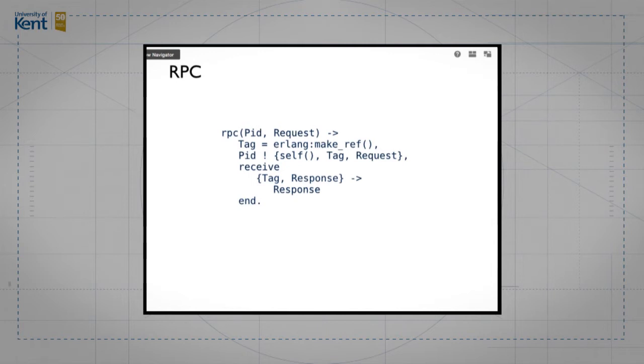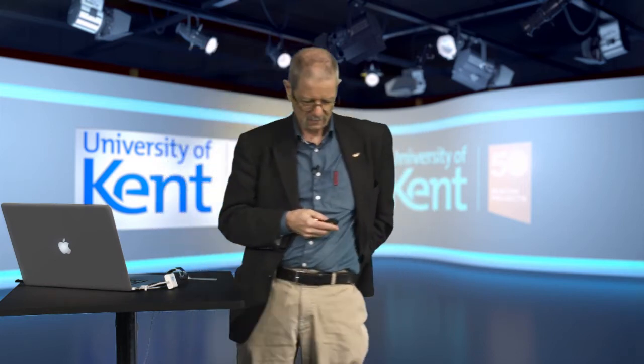PID conventionally stands for process identifier. It's the name of the process that's going to handle the request. We send a message to that. And that message has to contain our own identity. If it doesn't contain our own identity, the remote computer won't know who to send the message back to. And that's supplied by this parameter called self. And then we generate a unique tag. Unique tags done with this line of code, Erlang make ref.